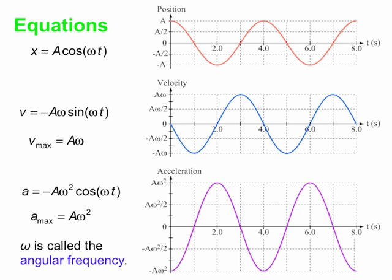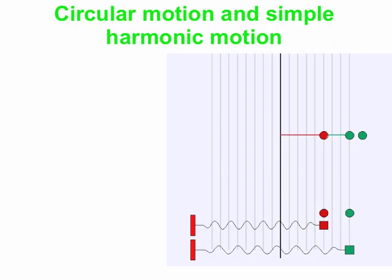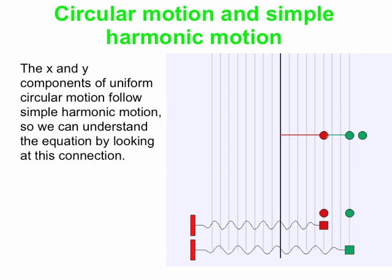Let's make a connection between simple harmonic motion and circular motion. We're going to see an animation. There's a red ball and a green ball experiencing uniform circular motion going counter-clockwise. To the right and underneath, we see the y and x components of that circular motion. At the bottom are blocks attached to springs showing simple harmonic motion. What we're going to see is that one component of the uniform circular motion exactly matches the one-dimensional simple harmonic motion, so the equations that describe them have to be the same.